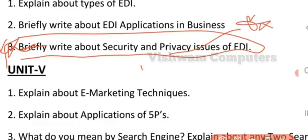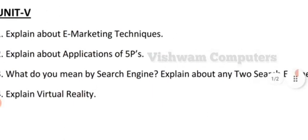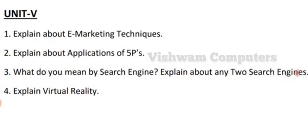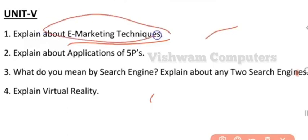The fifth and last unit from your e-commerce has questions related to marketing. The first question is e-marketing techniques — what kinds of e-marketing techniques are there? Explain them in detail, as this is a long question. E-marketing techniques are of two types: passive and aggressive methods, covering search engines, solicited targeted emails, and interactive sites.